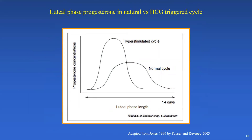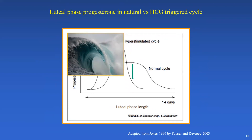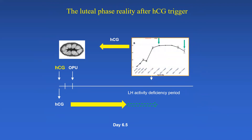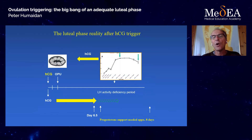What does luteal phase progesterone in natural cycle look like compared to the HCG trigger cycle? The hyperstimulated cycle has its peak of progesterone significantly earlier than the normal cycle, which has its peak just around implantation. So what we are introducing when we trigger with HCG is a tsunami of progesterone, which could cause endometrial asynchrony when the embryo is going to implant. This is the luteal phase reality after an HCG trigger — approximately six and a half days, then no more HCG, progesterone is declining, and we still don't have the embryo implanted to produce its own HCG.